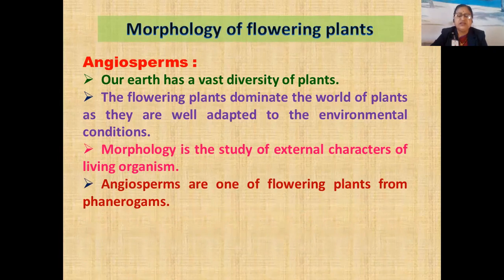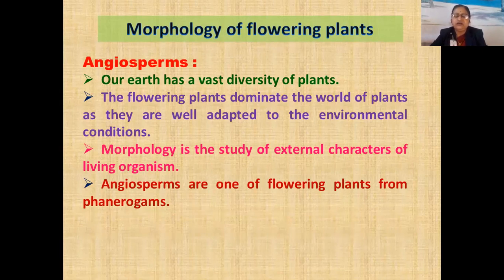Gymnosperms are naked-seeded plants. While Angiosperms — 'angio' means clothed, 'sperma' means seeds — so seeds are enclosed within fruits. Angiosperms are one of the flowering plants from Phanerogams, and we will study Angiosperms first.